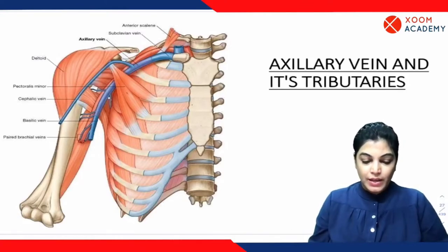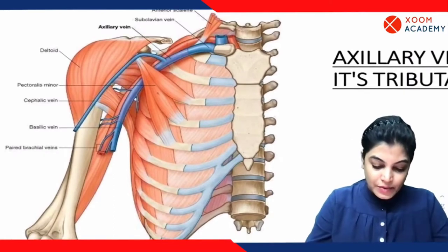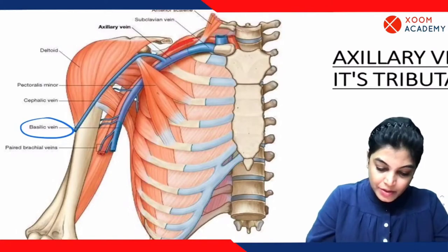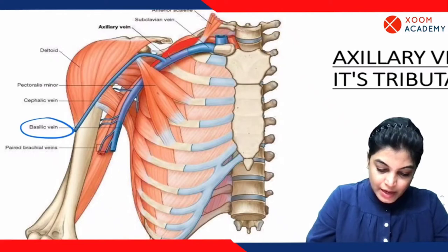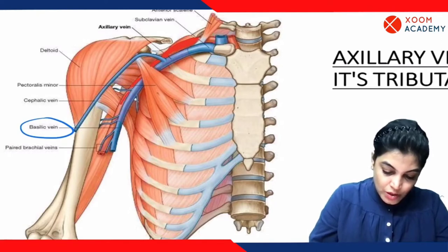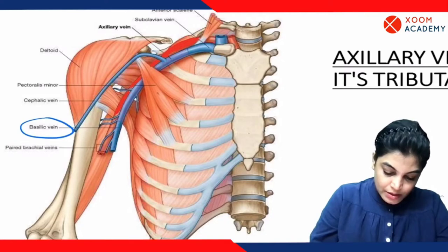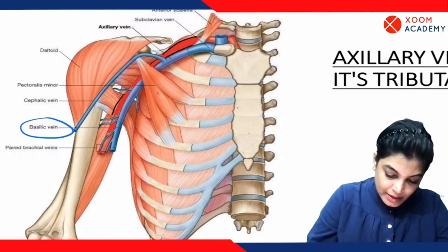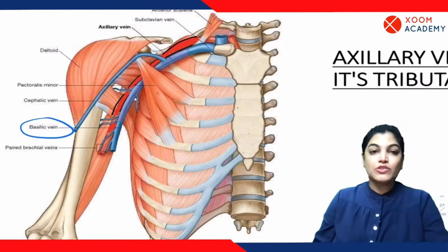I would like to enlarge this image. Here we can clearly see the basilic vein, and we can also appreciate the axillary artery and the brachial artery. I am using a red color for highlighting. Just lateral to the axillary vein we have the axillary artery, which lower to the level of teres major becomes the brachial artery.